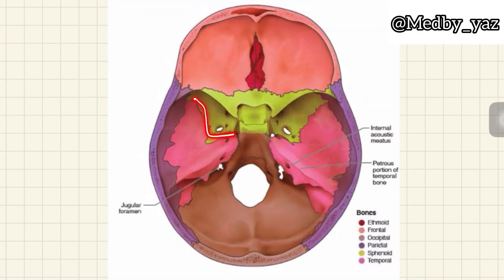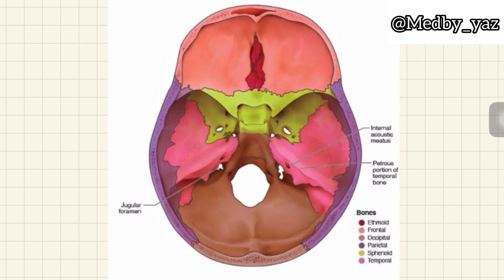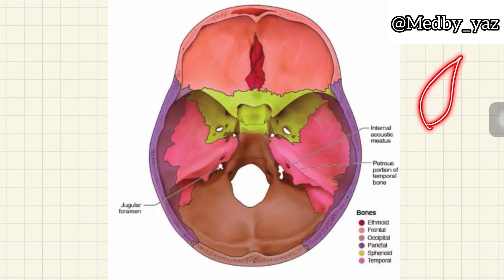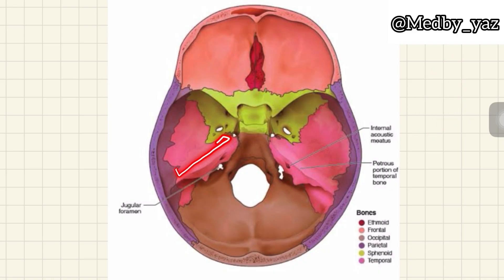This is the sphenoid bone of the skull, this is the squamous part of the temporal bone, and this is the occipital bone. The petrous part of the temporal bone is a leaf-shaped structure with two slants — an anterior slant and a posterior slant. The anterior slant articulates with the squamous part of the temporal bone.